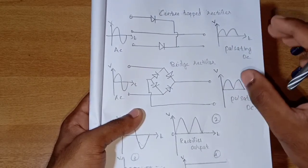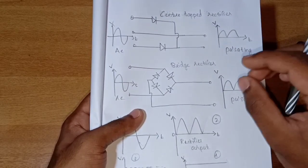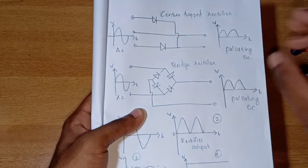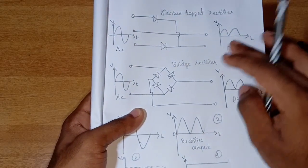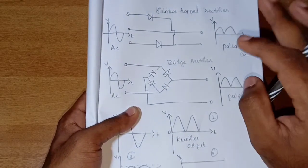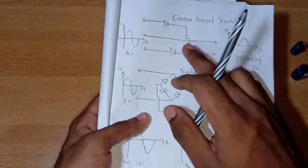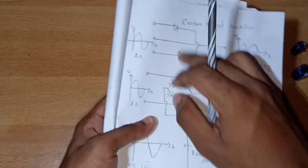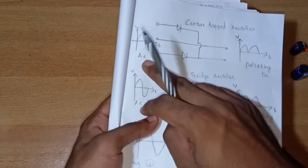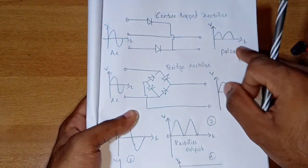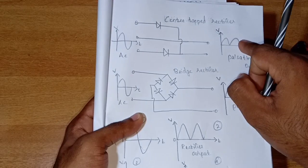The output of AC should be clear. This is the pulsating DC. This is the center-tapped rectifier — we get AC input and the output is pulsating DC.